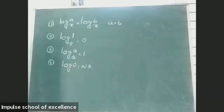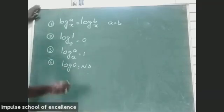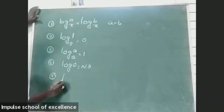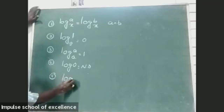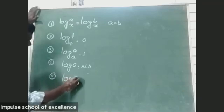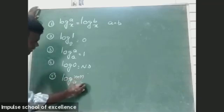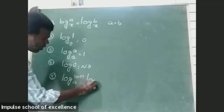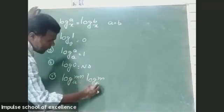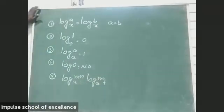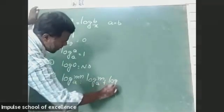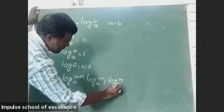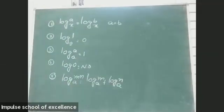Log 0 is only for positive numbers. The next property: log M base A is equals to log M base A plus log N base A.